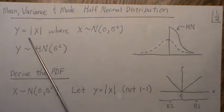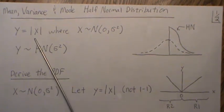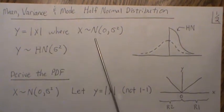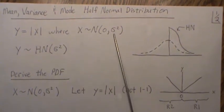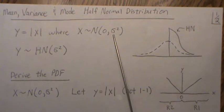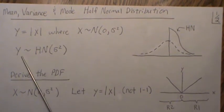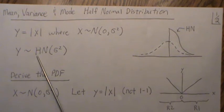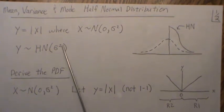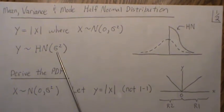If y is equal to the absolute value of x, where x is normally distributed with mean zero and variance sigma squared, then y is distributed with what's called a half normal distribution with parameter sigma squared.